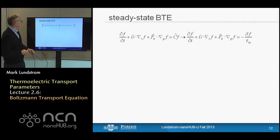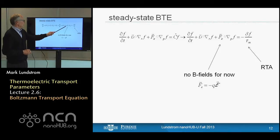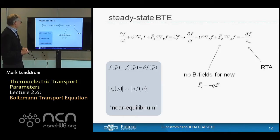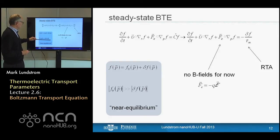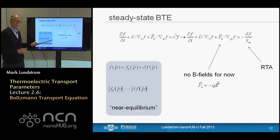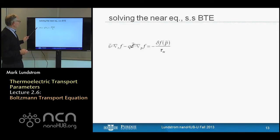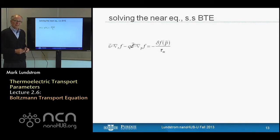We'll make the assumption that scattering events are very short in time duration — they knock an electron from one position in momentum space to another in a very short time, and don't change the position during the scattering event. We can then write the total rate of change of f due to collisions as a collision operator times f. Formally, we add the effects of collision by replacing zero with the collision operator times f.